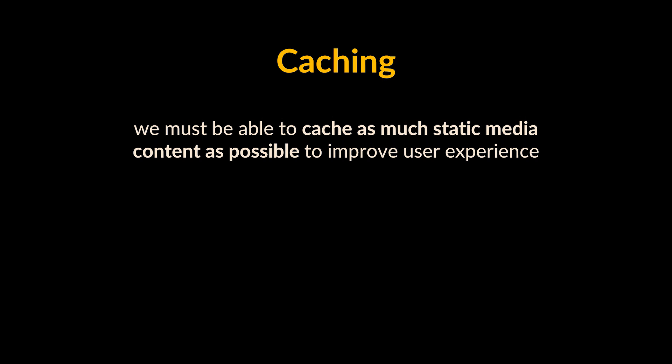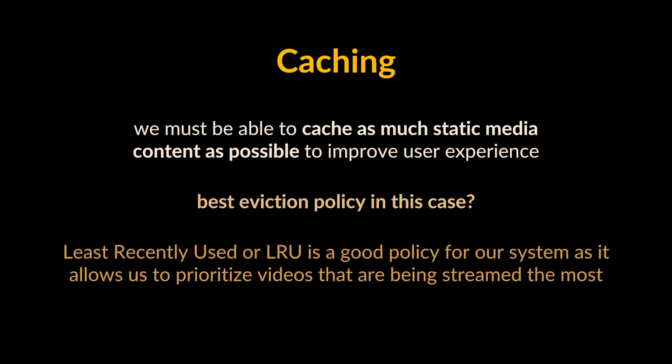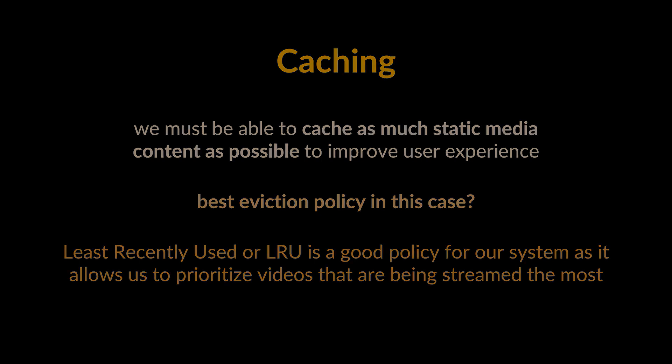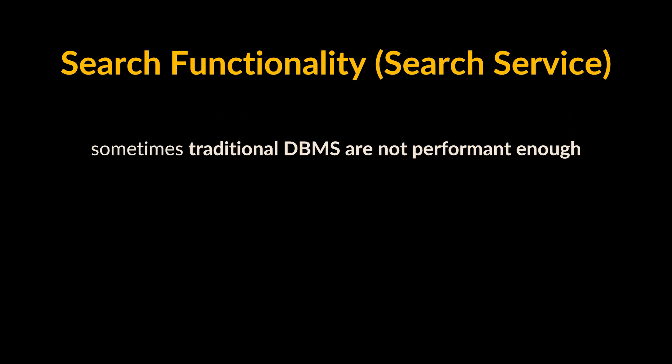In a streaming platform, caching is important — we must be able to cache as much static content as possible to improve user experience. We can use solutions like Redis or Memcache. As for cache eviction policy, Least Recently Used (LRU) can be a good fit for our system. In this policy, we discard the least recently used key first, thus prioritizing videos that are being streamed the most.